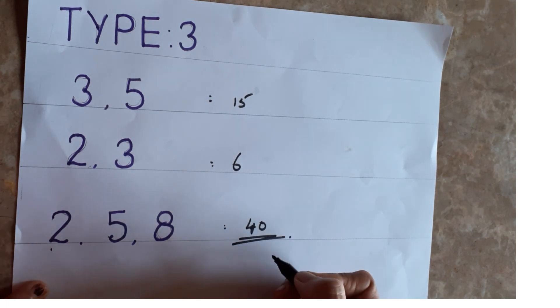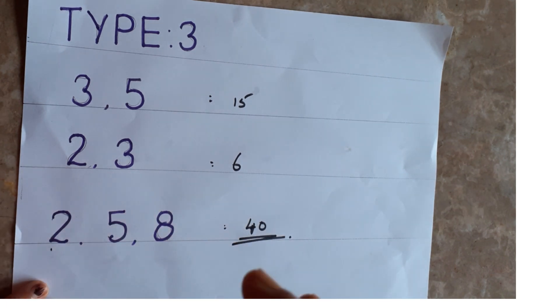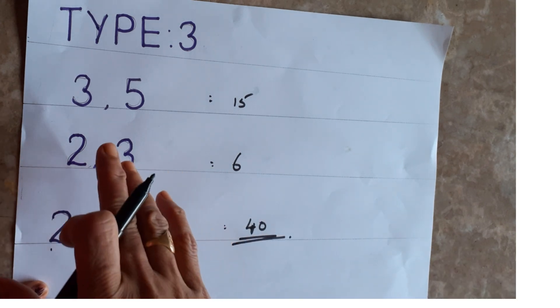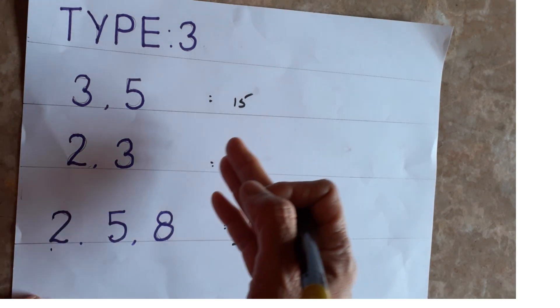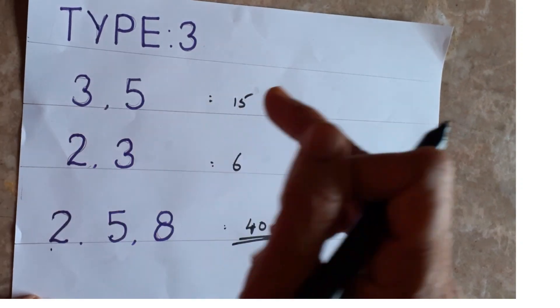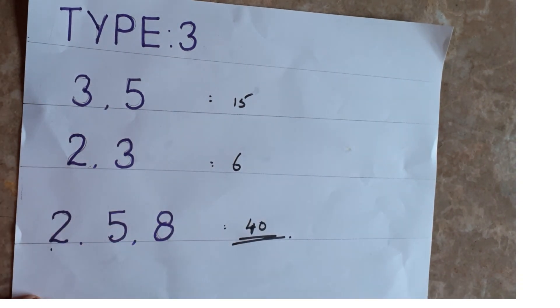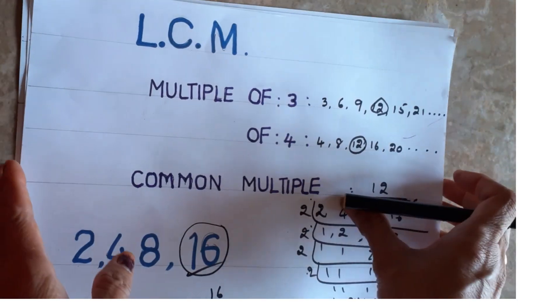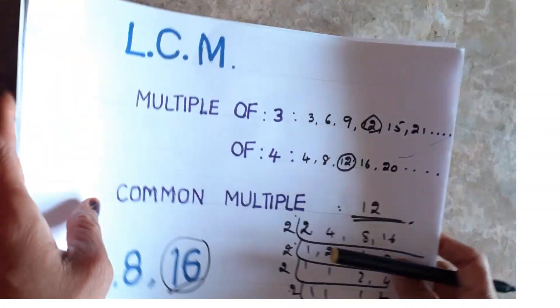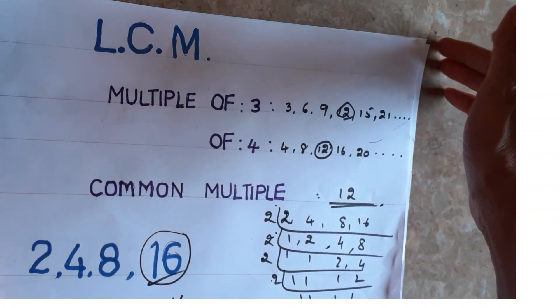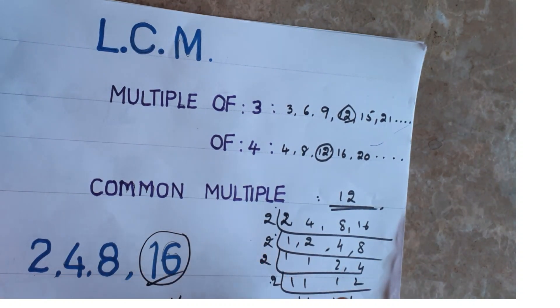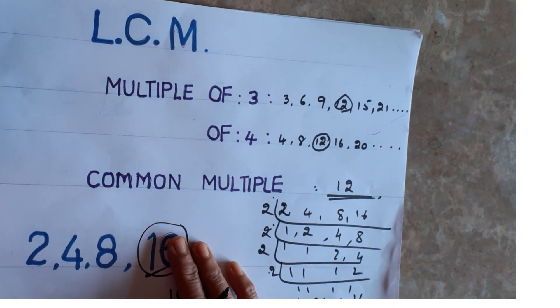To summarize: if numbers are the same type, find the highest and write it as LCM. If different numbers, take the highest and multiply by 2, then 3, then 4, until all numbers divide into it. If prime numbers appear, multiply them together. Once you know this concept, you can solve any LCM problem quickly in exams. If you like the video, please share, like, and subscribe. Thank you for watching.